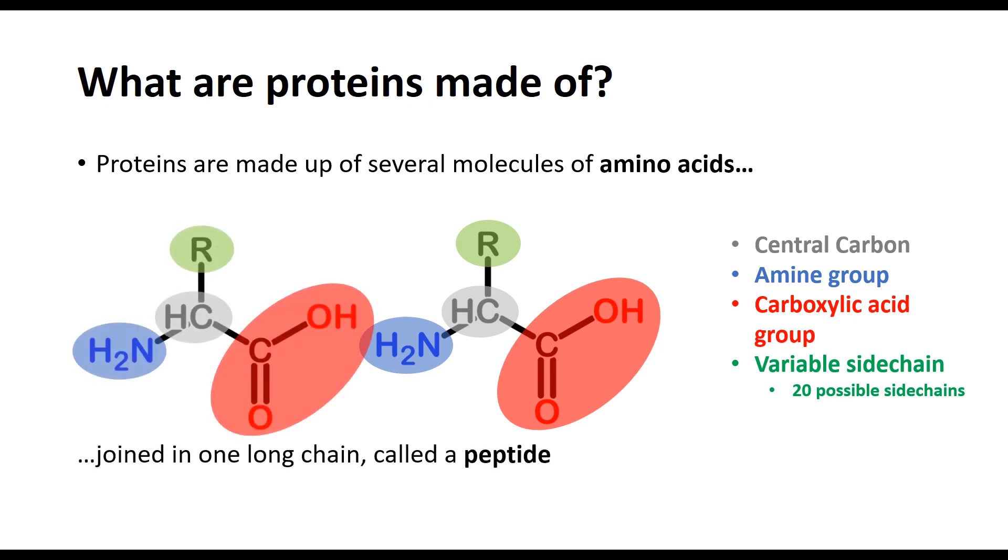In proteins, amino acids are joined by bonds between these groups to form a backbone similar to the sugar phosphate backbone of DNA, with the final product being a long chain that is known as a peptide.